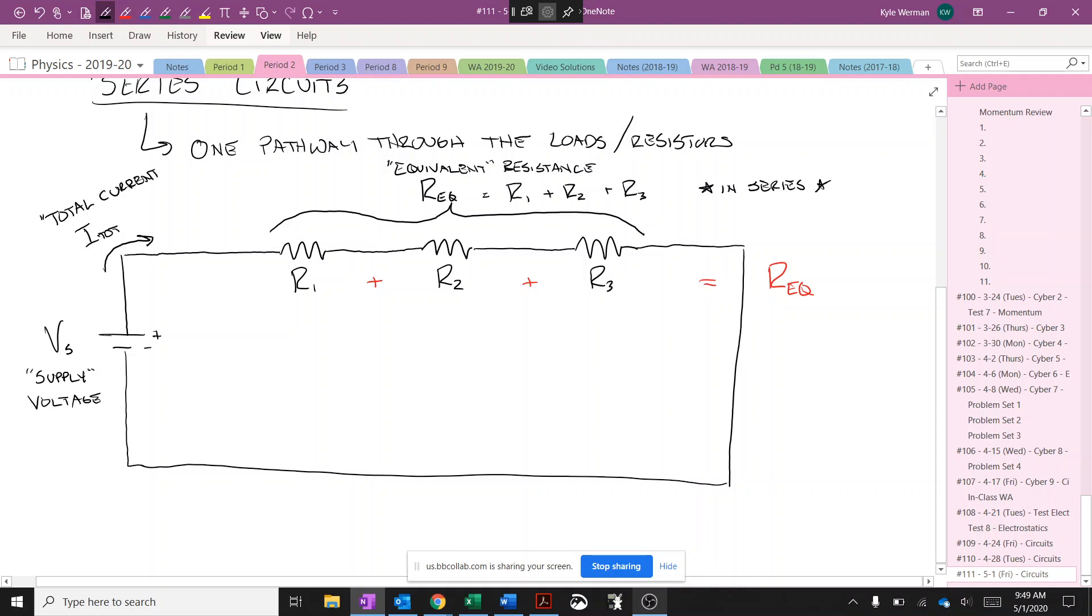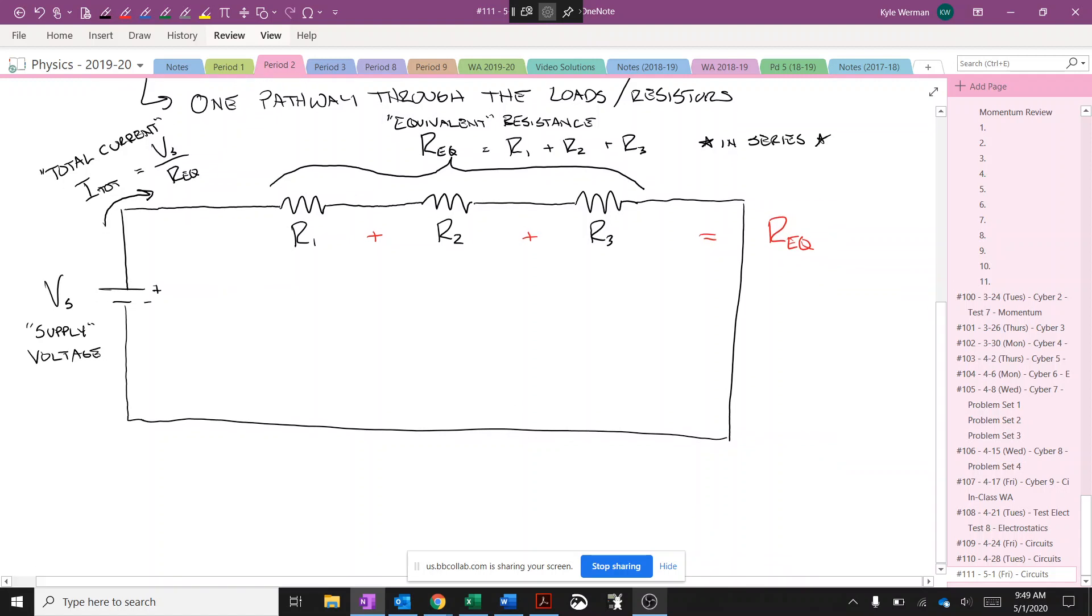That's leaving that supply or that battery. And Ohm's law would suggest that, if V equals IR, then the total current would be the voltage, voltage in this case the supply voltage, over that equivalent resistance. So usually when we break down a circuit, we're going to try to figure out what is that current. And as we saw in that lab, well then every resistor, because they're in series, is going to see that same current, right?